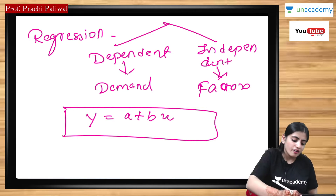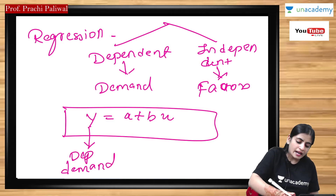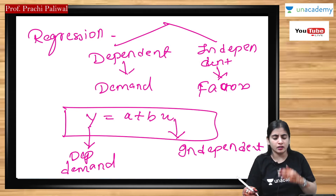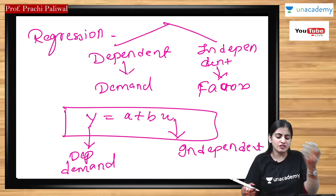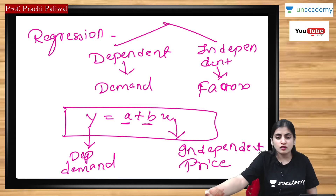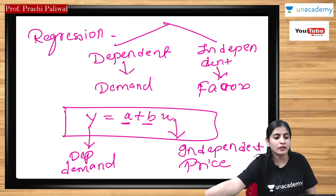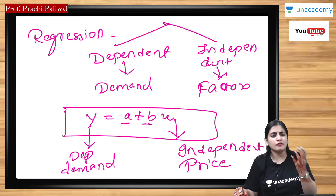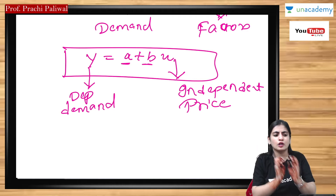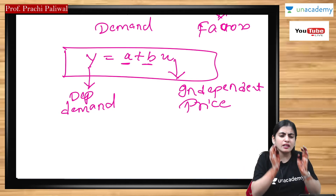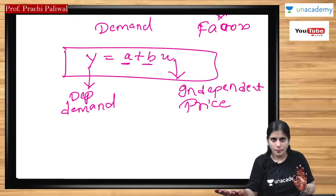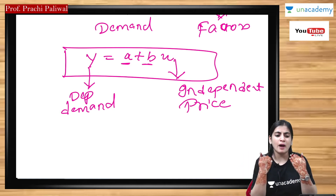In the equation Y = A + B × X, Y is the dependent variable — that is, demand. X is the independent variable, which can be any factor affecting demand. The most affecting factor on demand is price, so we can take X as price. A and B are constant variables, and there is a formula to calculate A and B, but it is not in our syllabus, so we only need to understand the equation conceptually.